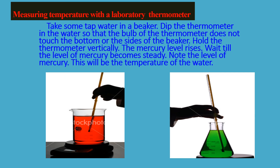How do we measure temperature with a laboratory thermometer? Take some tap water in a beaker. Dip the thermometer in the water so that the bulb of the thermometer does not touch the bottom or side of the beaker. Hold the thermometer vertically — the mercury level rises. Wait till the level of the mercury becomes steady. Note the level of the mercury; this will give you the temperature of the water. You can also use it for boiling water to measure the temperature of boiling water.